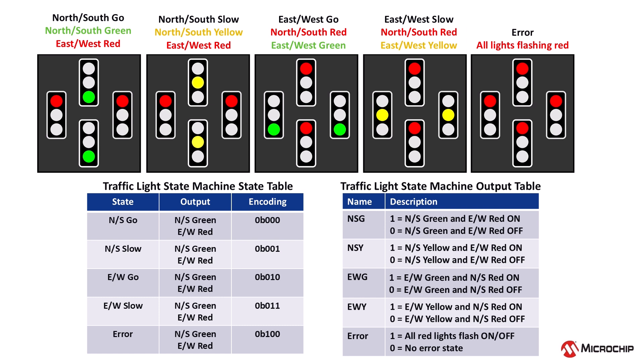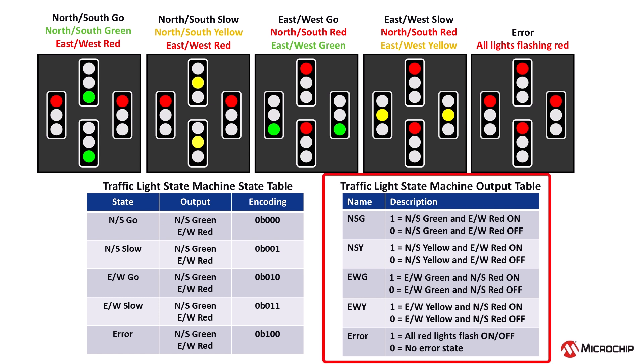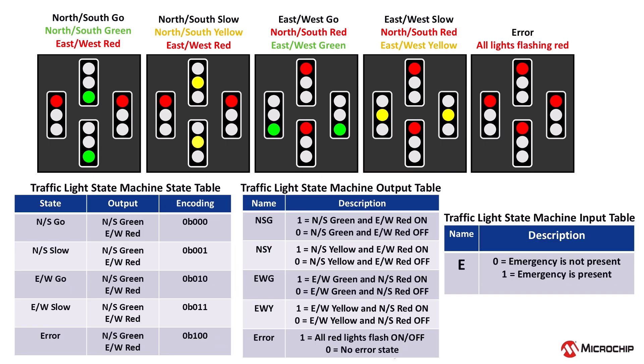Now that we've defined the system states, we need a way to control the traffic lights accordingly. The output table on screen defines which lights should be on or off in each state. With the states and outputs defined, the next step is identifying the inputs that control the system. This traffic light system has a single input e for error. When e equals zero, there is no emergency and the traffic lights operate normally. However, when e equals one, an emergency is detected and the system immediately transitions to the error state, flashing all red lights to stop traffic in all directions until the error is resolved.